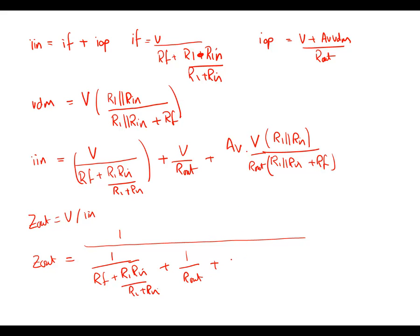And then we have another plus term here. So now we have Av R1 in parallel with Rn, all divided by Rout brackets R1 in parallel with Rn plus Rf. I should have expanded all of that term, but I haven't done here just for convenience. So now let's just have a quick think. What does that mean?